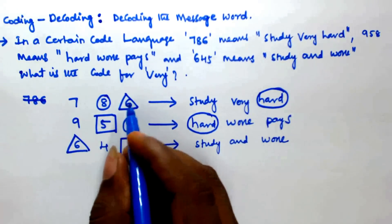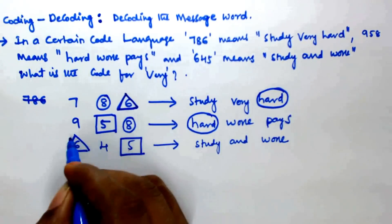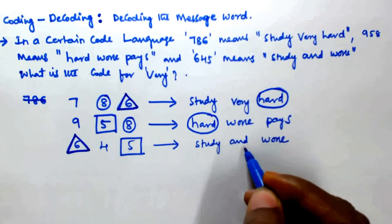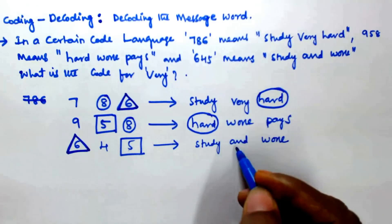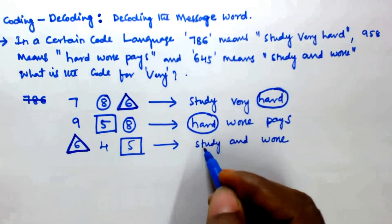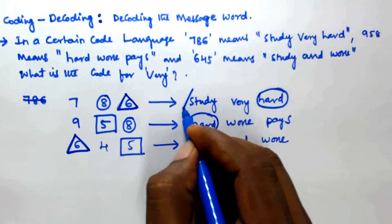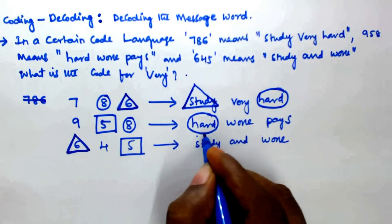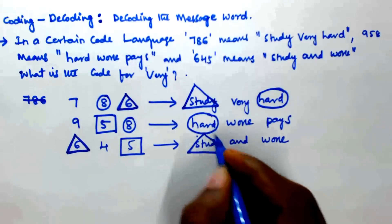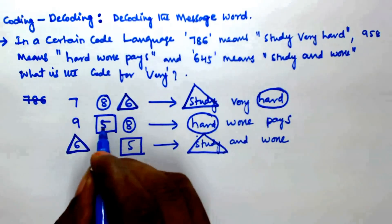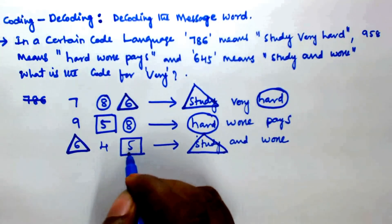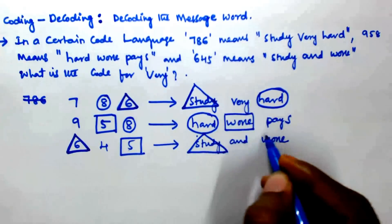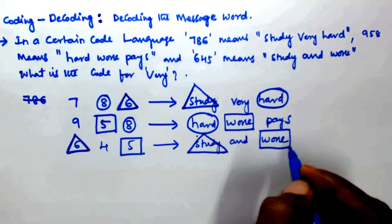Now six appears in the first message and also in the third message. The common word between 'study very hard' and 'study and work' is 'study', so six means 'study' — mark it with a triangle. Five appears in the second and third messages; the common word is 'work', so five means 'work'.